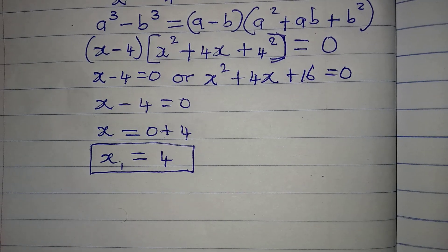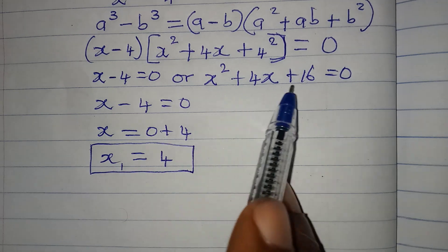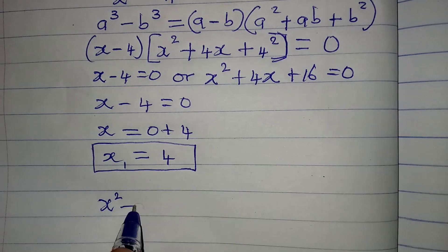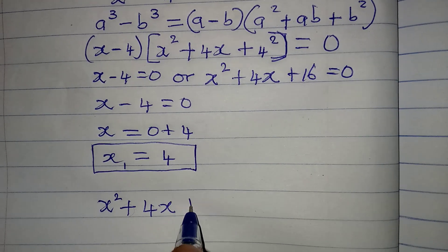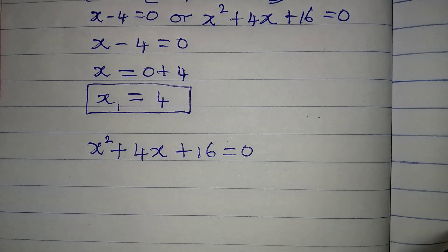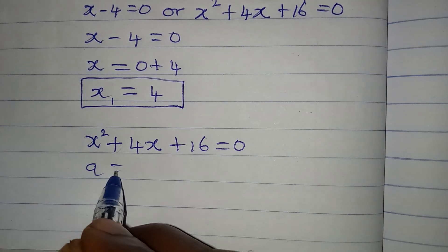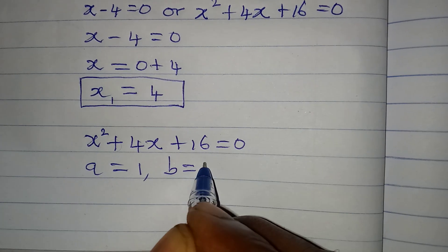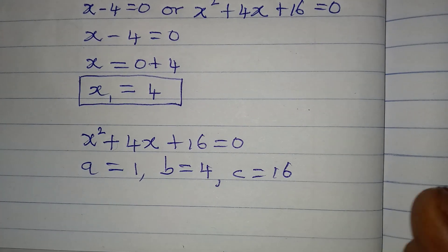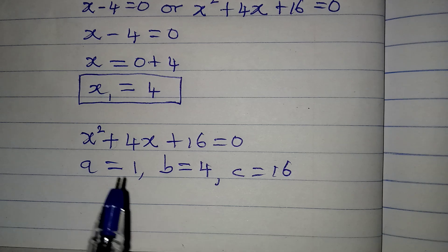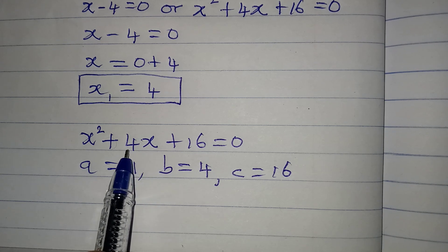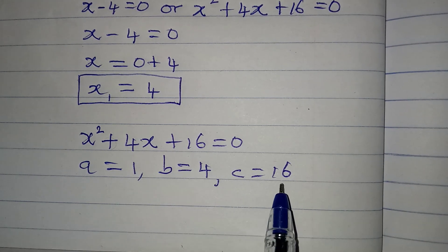To get the other solutions we pick the quadratic equation: x squared plus 4x plus 16 equals 0. We use the quadratic formula, where a equals 1, b equals 4, and c equals 16. Here, a is the coefficient of x squared, b is the coefficient of x, and c is the constant term.